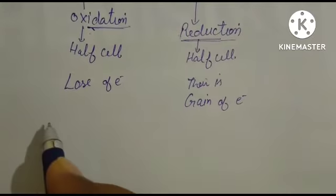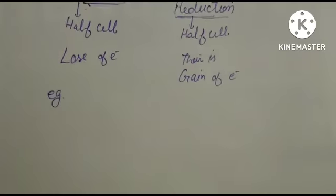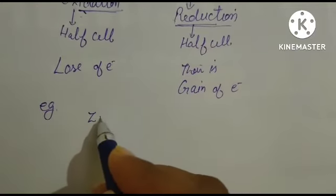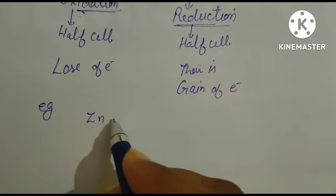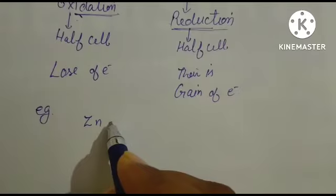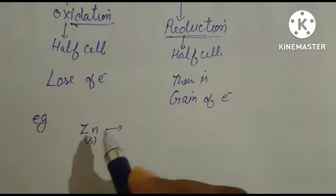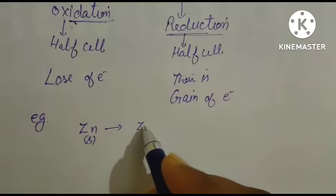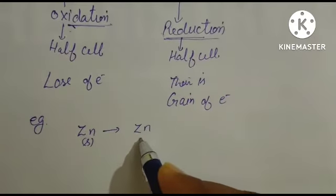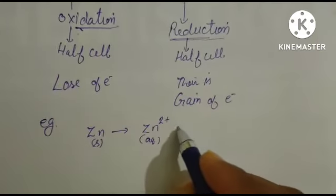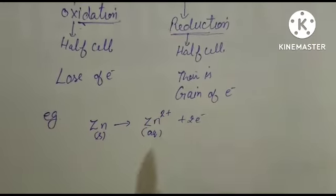For example, we consider a general chemical reaction in which zinc loses its electrons. Zinc in solid form, when it is in aqueous form, it loses its electrons, that is Zn2+ aqueous plus 2 electrons.